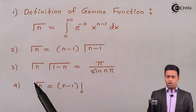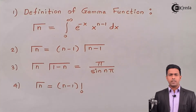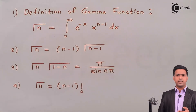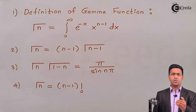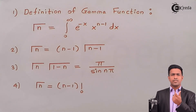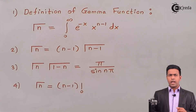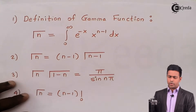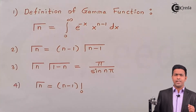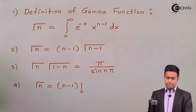To solve this numerical using the gamma function, we need to bring the integration into the standard form — an exponential term with power −x (or −y) multiplied by an algebraic term x raised to some constant. Our aim is to convert the given question into the form of the gamma function definition and then apply it as gamma(n).